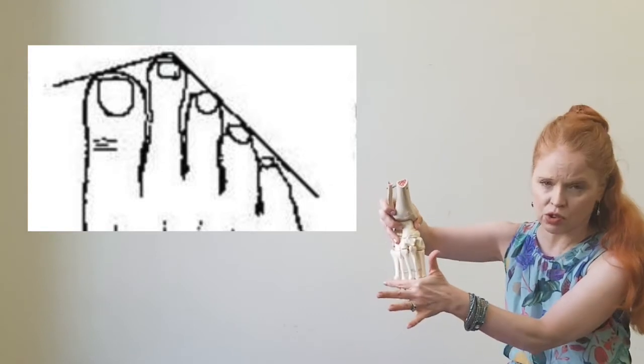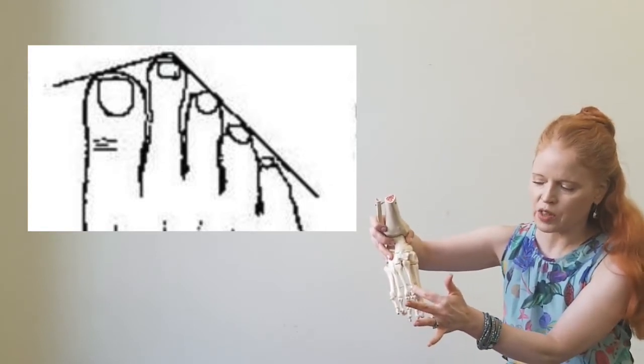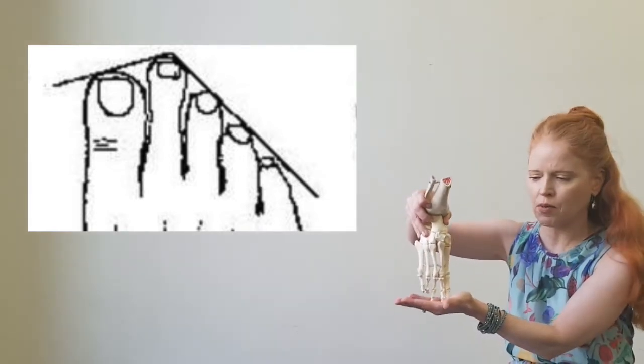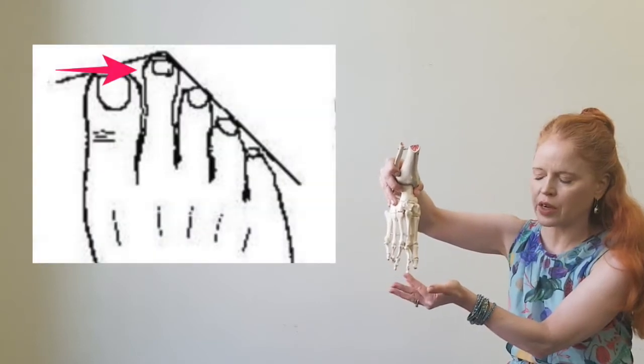See on this model that I have, the metatarsals are going straight across. Morton's toe doesn't work out for that person like that. These metatarsals are not in line, so it creates a little bit of a problem when they go on pointe. Usually all the pressure will go to that long second toe.